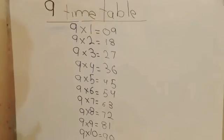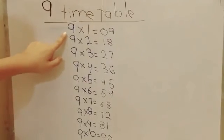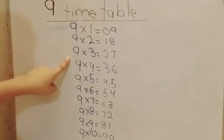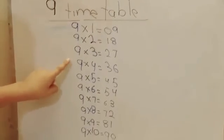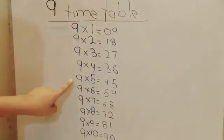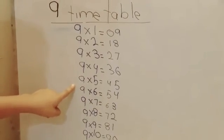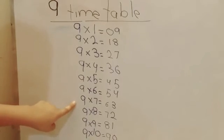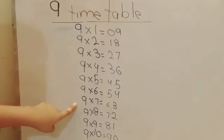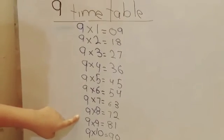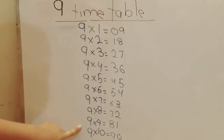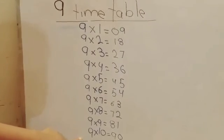Let's repeat it once again. 9 times 1 equals 9, 9 times 2 equals 18, 9 times 3 equals 27, 9 times 4 equals 36, 9 times 5 equals 45, 9 times 6 equals 54, 9 times 7 equals 63, 9 times 8 equals 72, 9 times 9 equals 81, 9 times 10 equals 90.